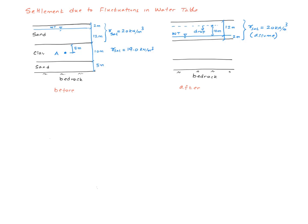And let's just say, due to capillary action, even this part of the soil is saturated. The saturated density of the whole sand layer, top to bottom, is 20 kilonewton per meter cubed. And the saturated density of the clay layer is 19 kilonewton per meter cubed.